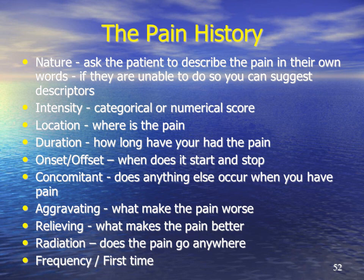There are different pointers to the pain history. It's important to ask the nature of the pain, which can be difficult for the patient to interpret. Other important factors include the intensity, where the pain is, how long the patient has had the pain, the duration. Is it started or stopped by anything, or does it occur with other symptoms? Is there something that makes the pain worse, for example weight-bearing? Is there something that makes the pain better, perhaps eating food if they have abdominal pain? Does the pain radiate anywhere, how often are they getting it, and when did they first have problems with the pain?